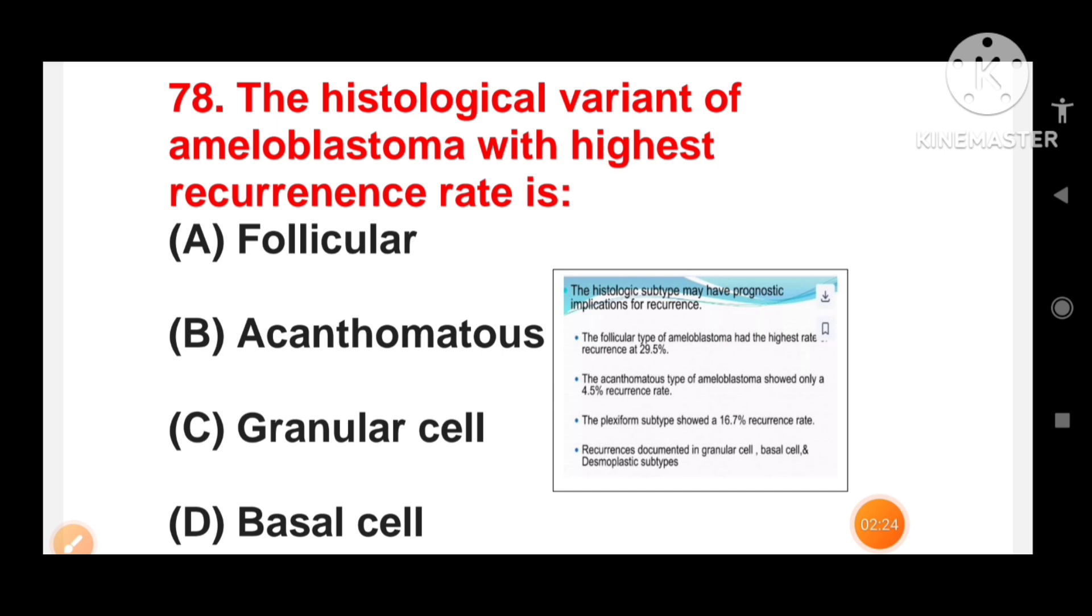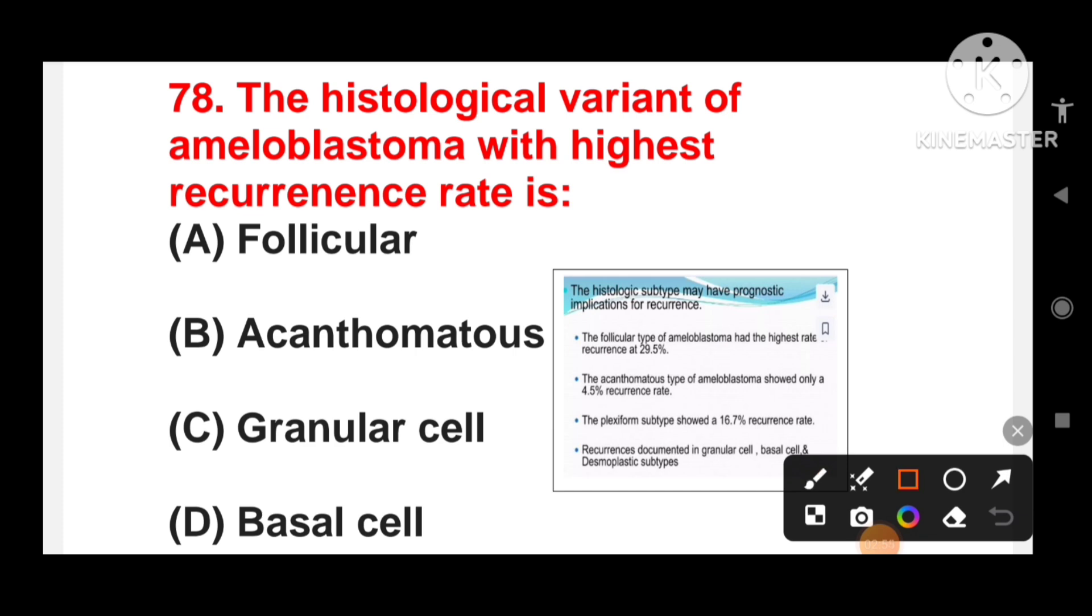Next question is, the histological variant of ameloblastoma with highest recurrence rate is follicular, acanthomatous, granular cell or basal cell? So here I have shown you that the histological subtypes may have prognosis implications for recurrence. The follicular type of ameloblastoma is at the highest rate recurrence at 29.5%, and plexiform subtype showed 16.27% recurrence rate. So the histological variant of ameloblastoma with highest recurrence rate is follicular.